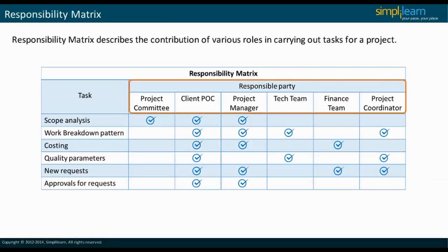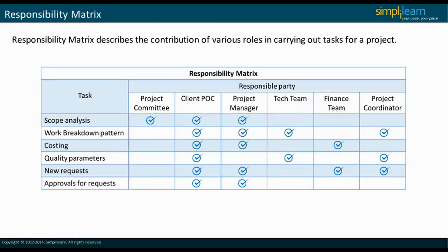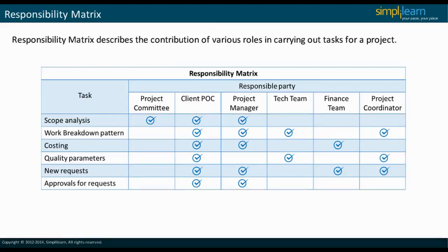A responsibility matrix describes the contribution of various roles in carrying out tasks for a project. It enables both project managers and team members to see the tasks that are allocated. It also shows the order of tasks to be completed. A project manager gets to see the overall matrix that defines which resource needs to be available for which task in order to ensure that these tasks are completed. A sample screenshot of a responsibility matrix is shown on the slide. In the next slide, we will discuss the types of resources.